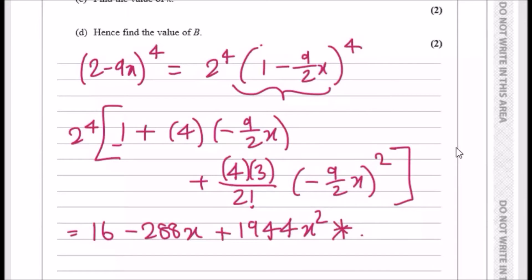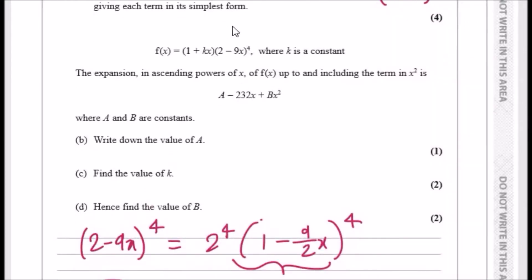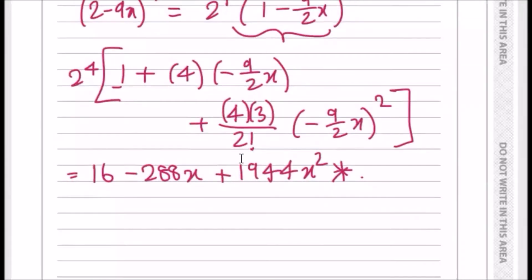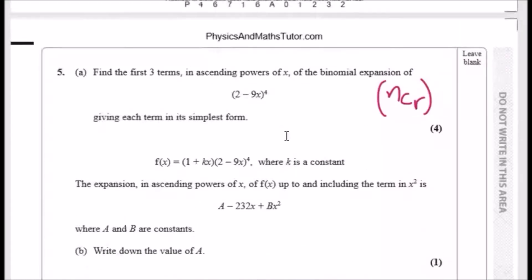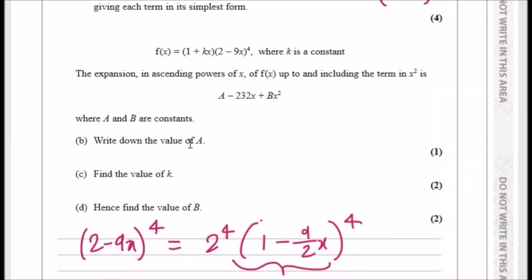Now here comes the main event. So according to this one, f(x) equals (1+kx), one linear term, times what we just had up here. So this would effectively be the expansion here. The expansion is in ascending positive powers of x of f(x) up to and including the term in x squared. So in other words, expanding this up to x squared will give us this kind of result.